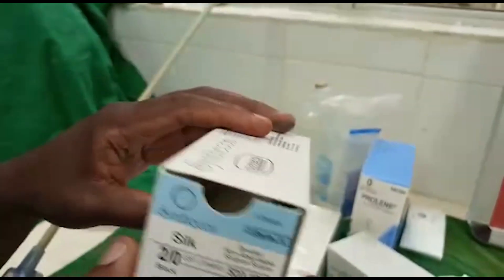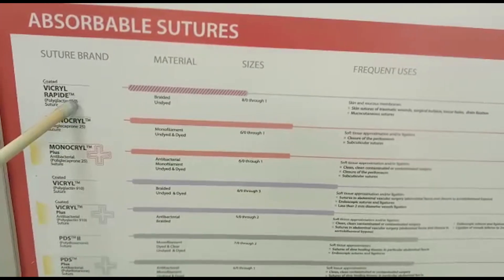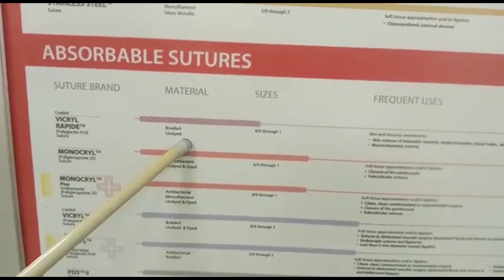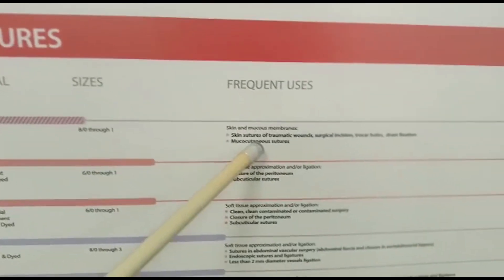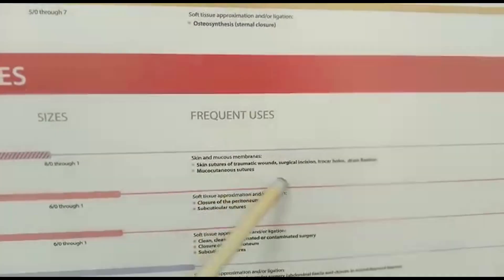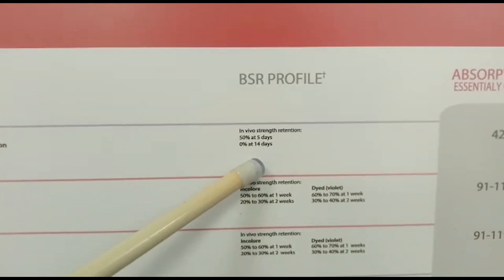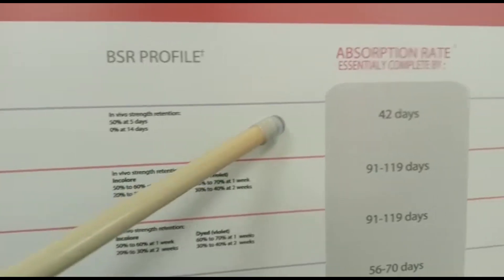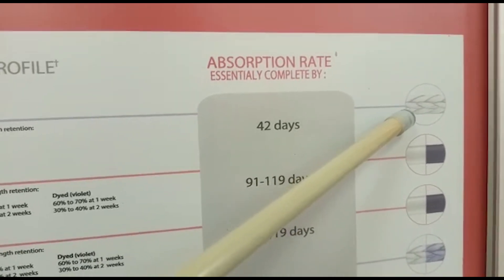From there we proceed to absorbable sutures. First, we have Vicryl Rapide, which is a braided suture that is undyed, meaning it is not colored. It is normally used in skin closure, trauma wounds, and trocar holes when doing laparoscopic procedures. The basic strength lasts for 5 to 14 days, and for the suture to be completely absorbed by the body it takes 42 days.